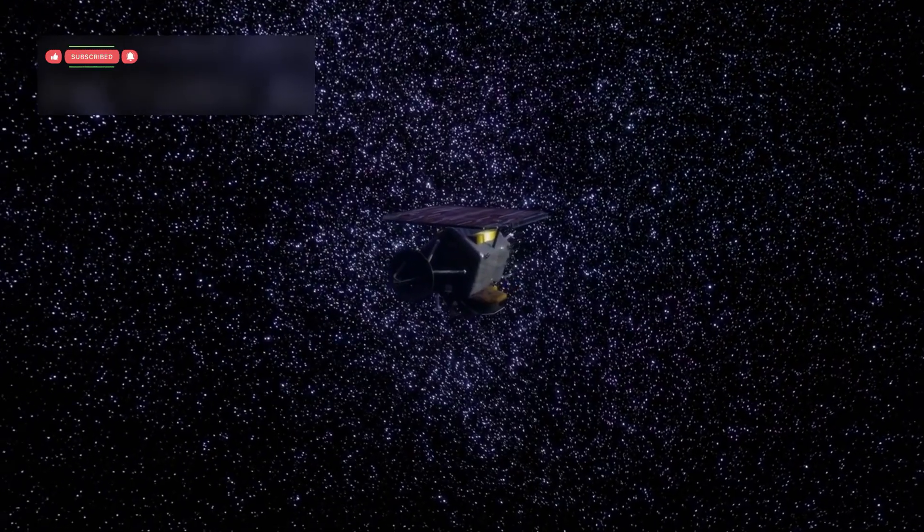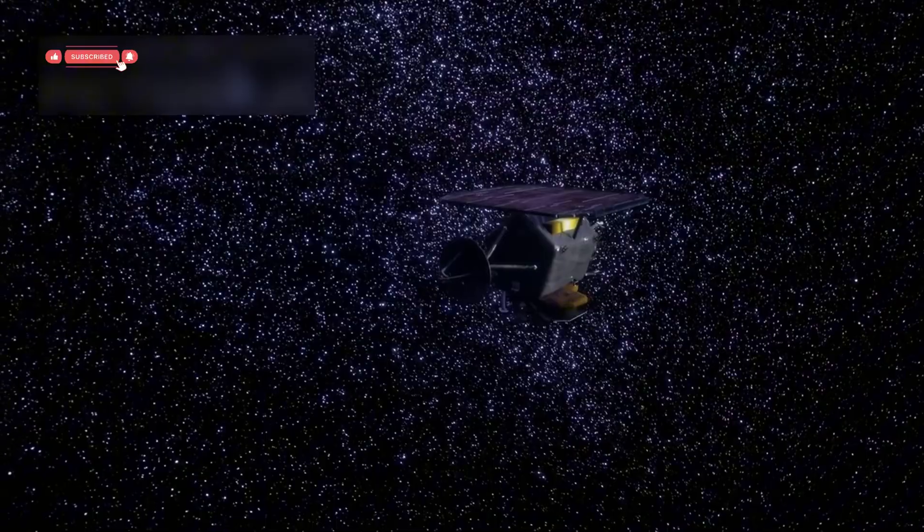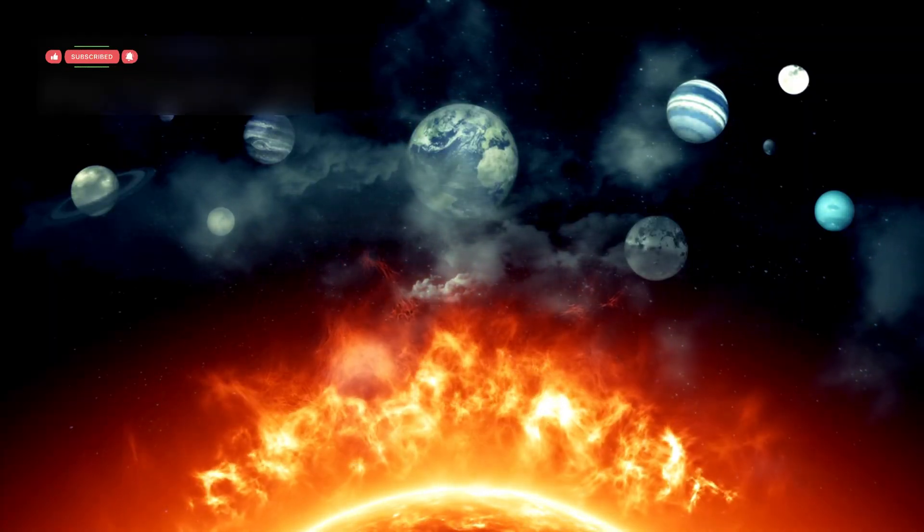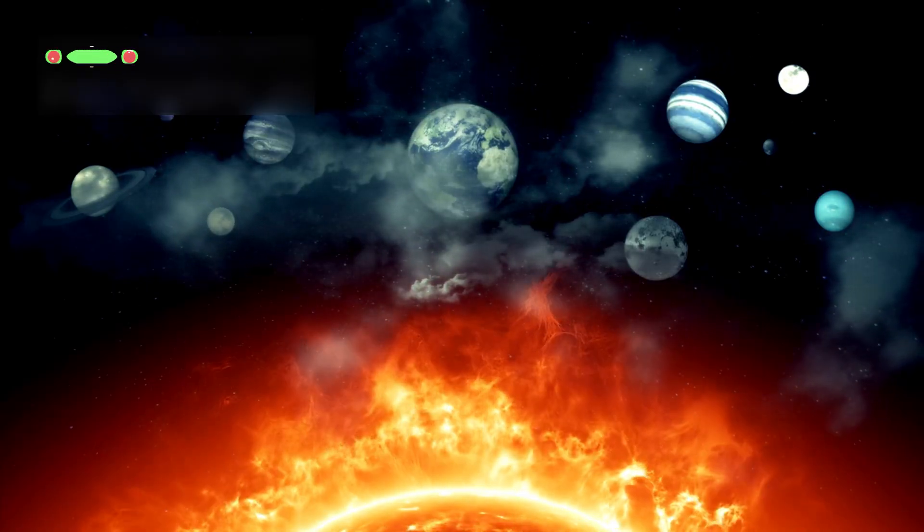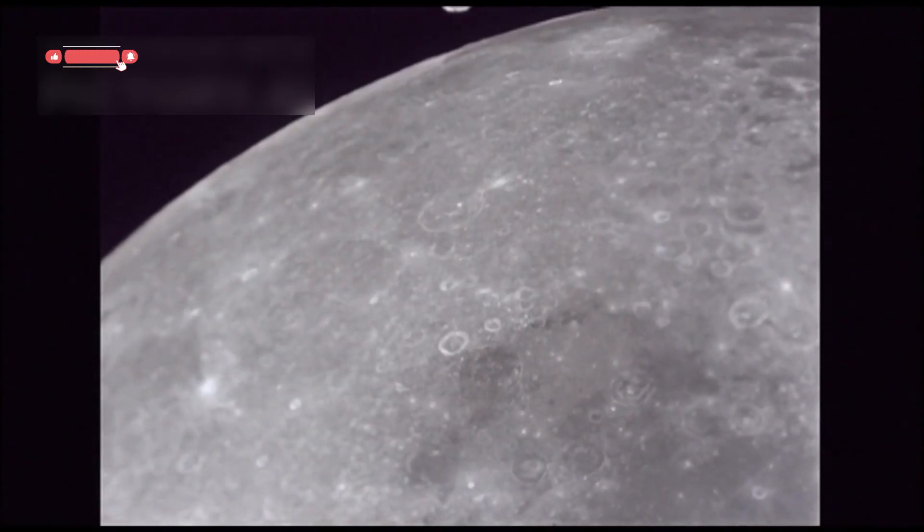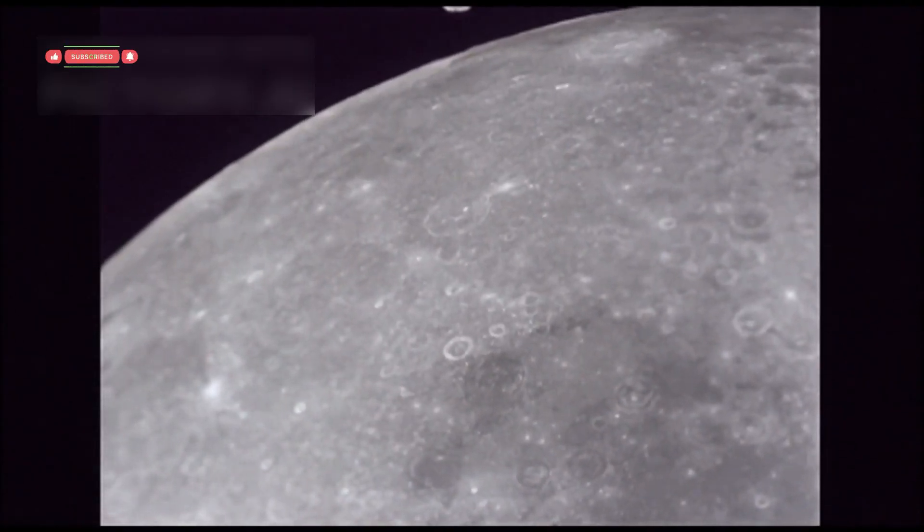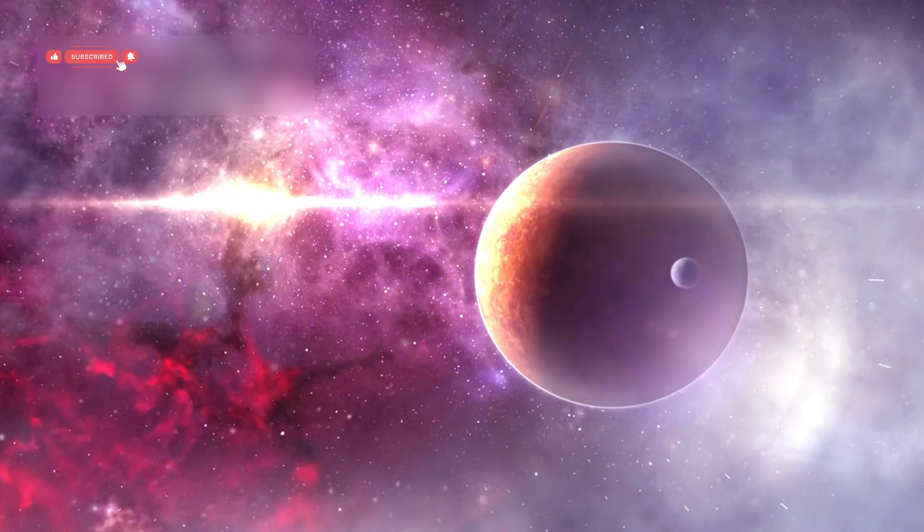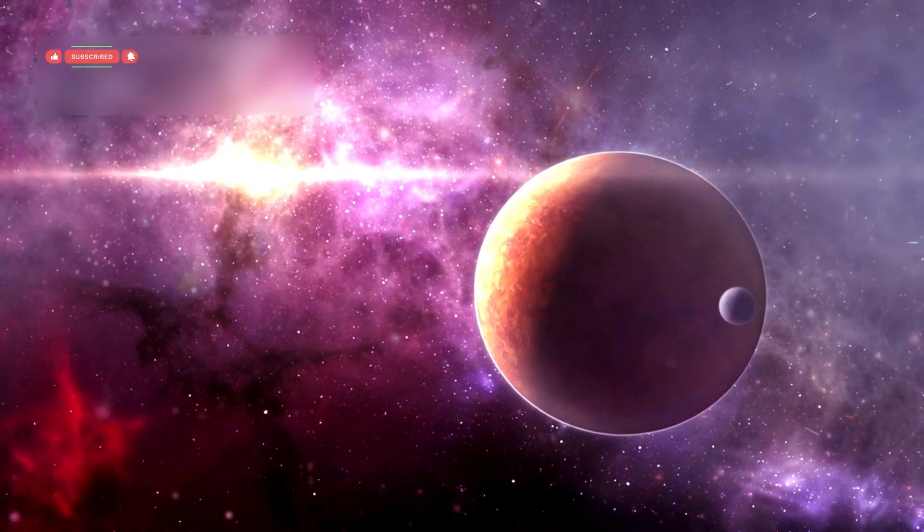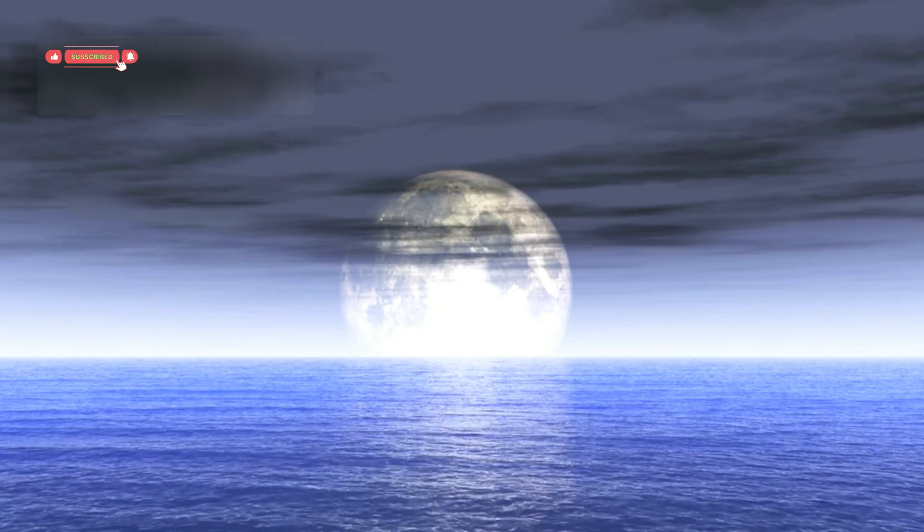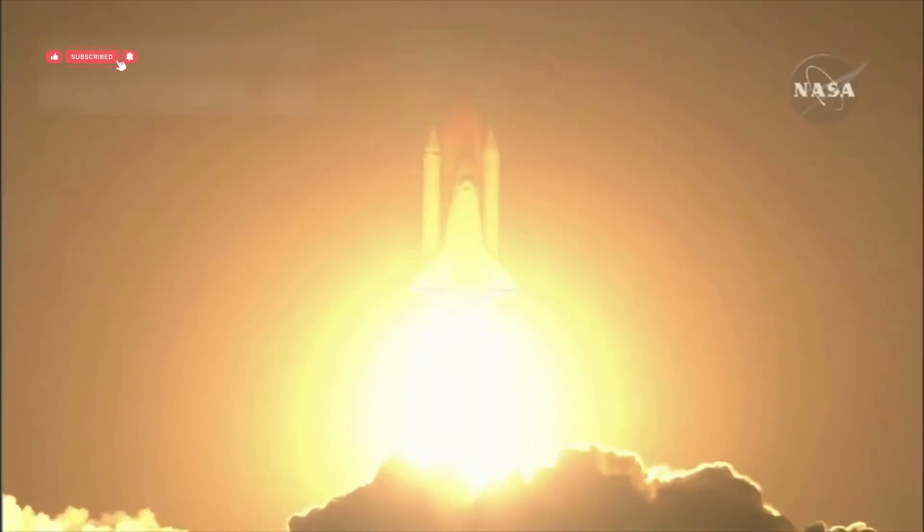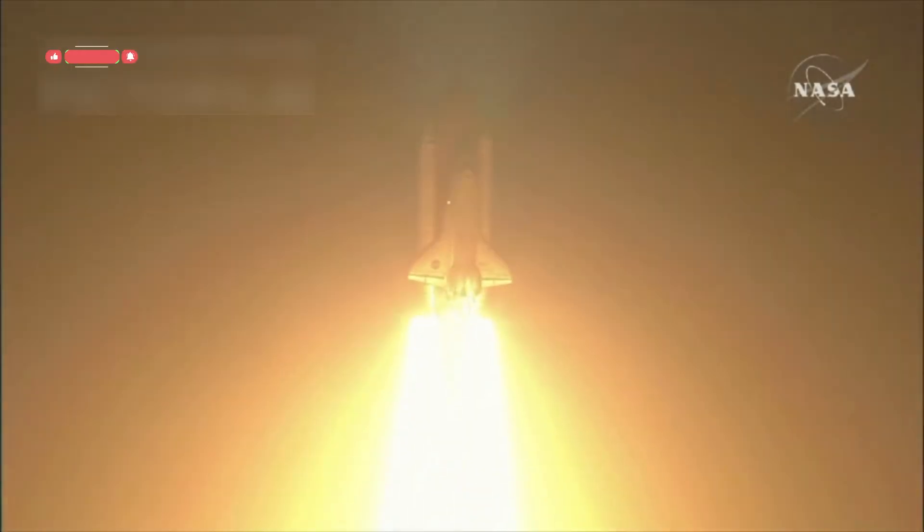The legacy of the Voyager mission is immense. It has changed how we understand the solar system and inspired generations of scientists and engineers. Before Voyager, many of the planets and moons were just dots in the sky. By the end of the mission, images and data from the Voyagers had rewritten textbooks around the world. We learned that moons thought to be dead could be active and even have oceans under ice.